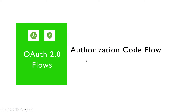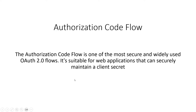Hey guys, welcome back. In today's video we're going to look at OAuth 2 flows. There are many types of authorization flows available, and the first one is the authorization code flow that we are going to look at today. This is the widely used, secured authentication flow in OAuth 2, and it is mostly adapted with the PKCE flow for web applications.